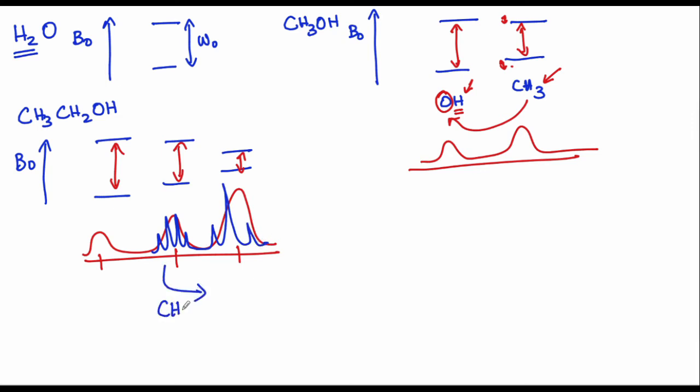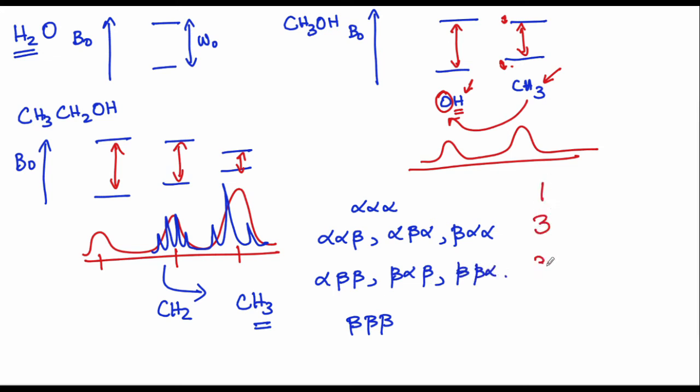So let us look at the methylene proton. It has a neighbor which is a methyl proton and there are three of such methyl protons. What ends up happening? You could have all three protons that are in the alpha state or all the three protons that could be in the beta state. It could also be that you have combinations of them which is alpha, alpha, beta, alpha, beta, alpha, beta, alpha. Similarly, you could have alpha, beta, beta, beta, alpha, beta and beta, beta, alpha. And when you count these together, you get something of the sort of 1, 3, 3, 1. This ends up influencing the multiplicity and also the intensity of the multiplets that end up coming.